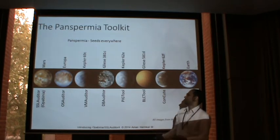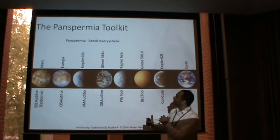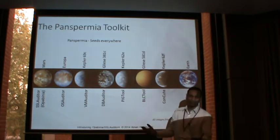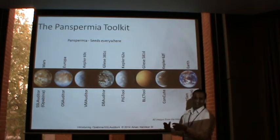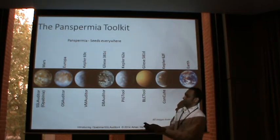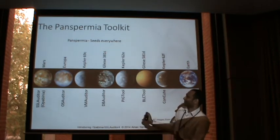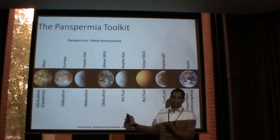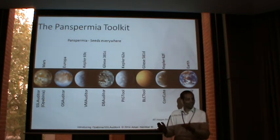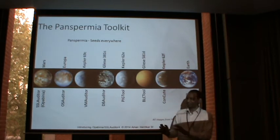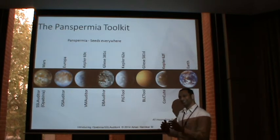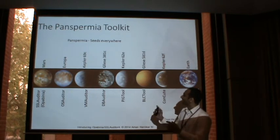Panspermia Toolkit has a tool to tackle the issues in each of these worlds — all these pictures represent various planets that might have life in them. We don't know; they are all a few light years away, so we are not advanced enough to detect life 100%.